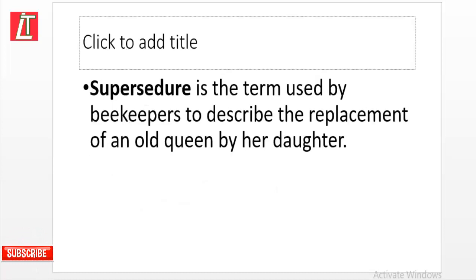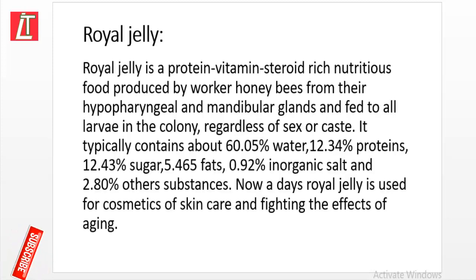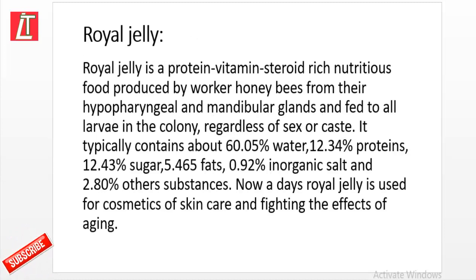This process is called supersedure. Supersedure is a term used by beekeepers to describe the replacement of an old queen by her daughter. Royal jelly is a protein, vitamin, and steroid-rich nutritious food produced by worker honeybees from their hypopharyngeal and mandibular glands, fed to all larvae in the colony regardless of sex or caste.